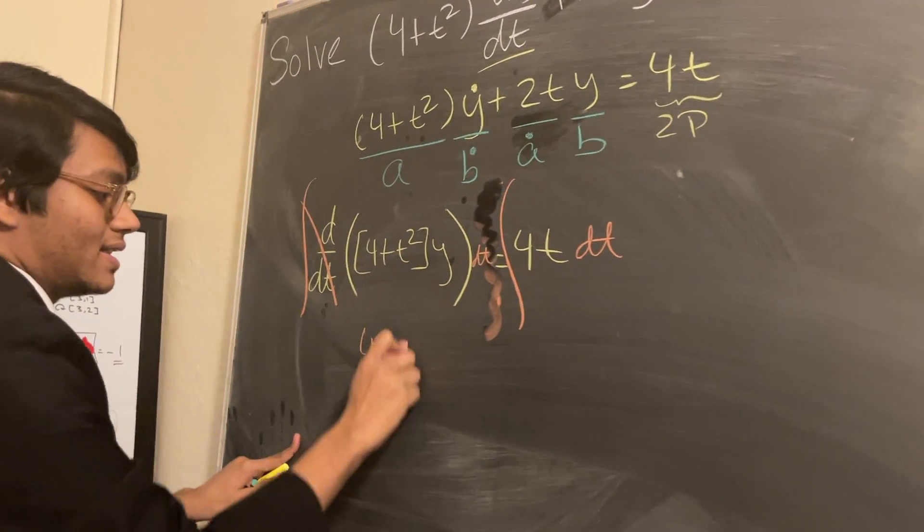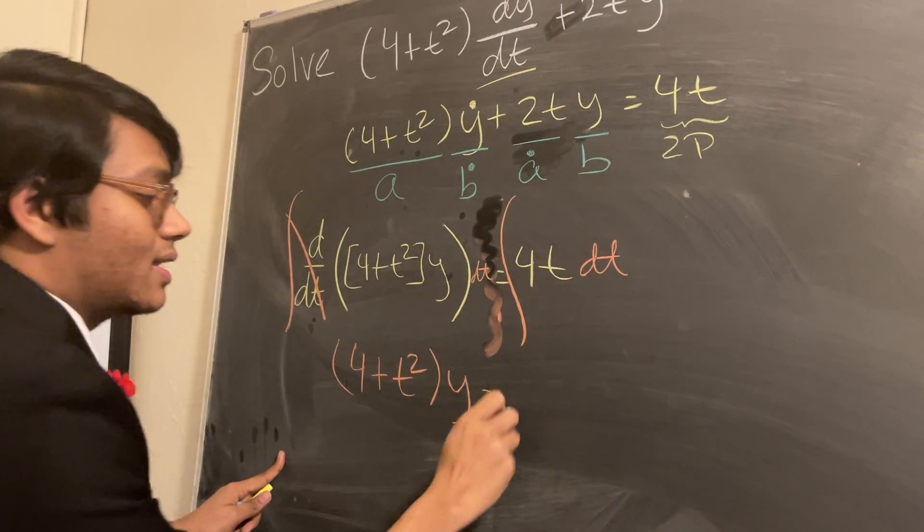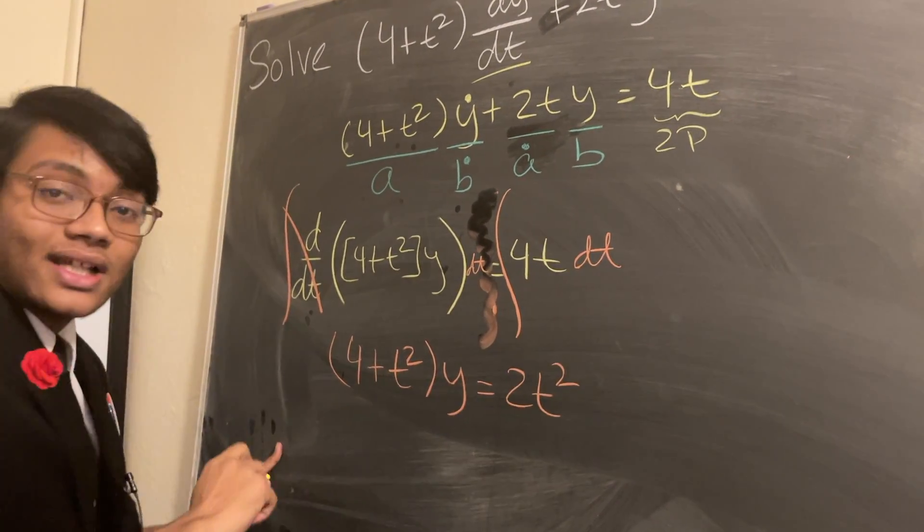And so what am I left with? I'm left with (4+t²)y equals, what does this become? Well, just use the power rule, and you're going to get 2t².